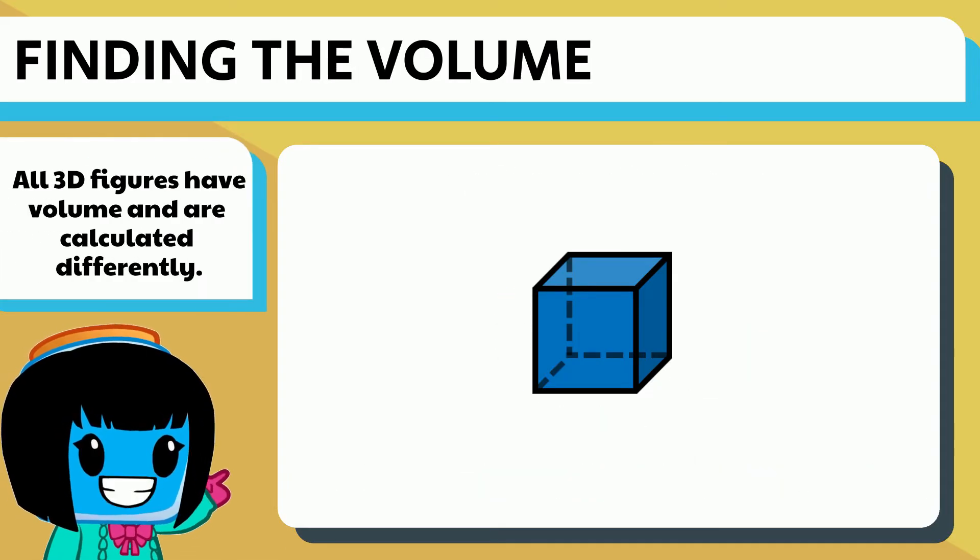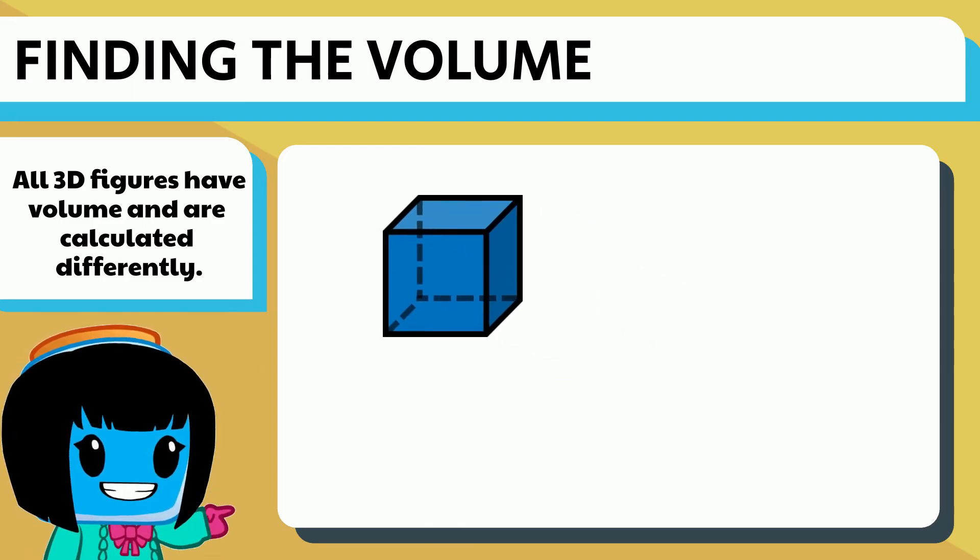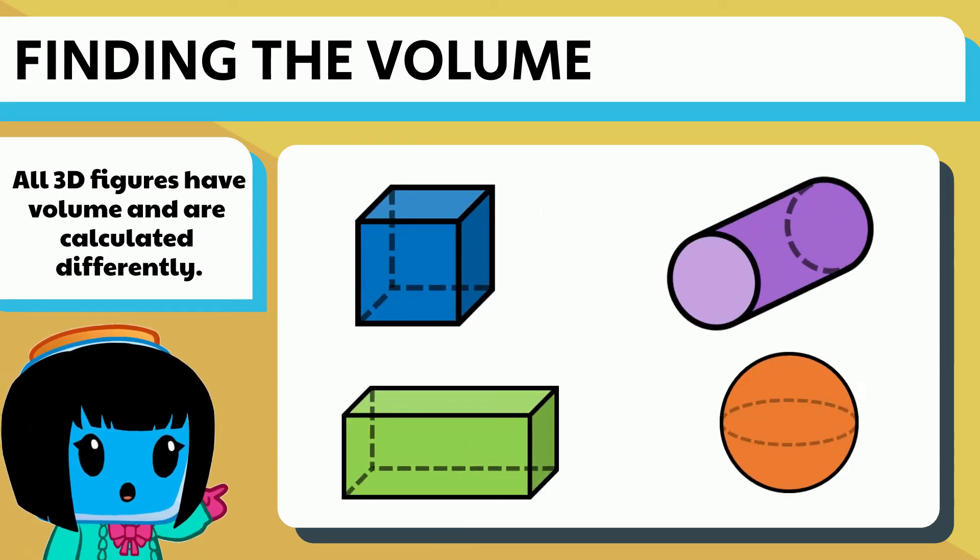All three-dimensional figures have volume. The volume of each 3D figure is calculated differently. For example, we can find the volume of cylinders, prisms, and spheres.